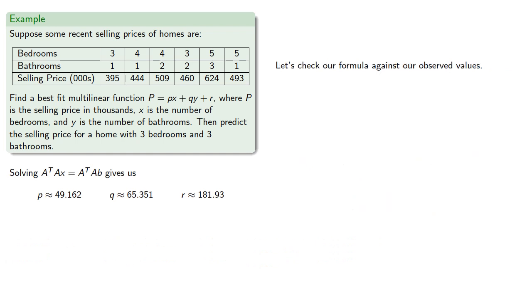Let's check our formula against our observed values. If this is the correct formula for predicting the selling price of homes, then its prediction should be at least close to the actual selling prices. We'll check it against some of our data.